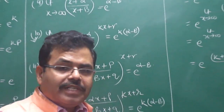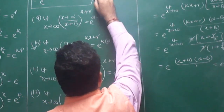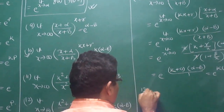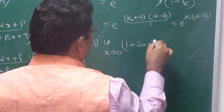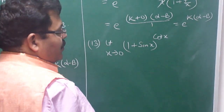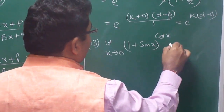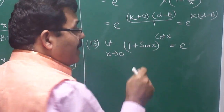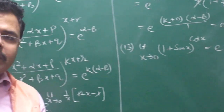Now some quick examples. Limit x tends to 0, 1 plus sin x to the power cot x. As x tends to 0, sin 0 equals 0, so we have 1 plus 0 to the power — and cot 0 is infinity — so this is 1 plus 0 to the power infinity. The answer is directly e. There is no need to write anything more. Once you understand this pattern — that 1 plus 0 to the power infinity anywhere gives answer e — you can write it immediately.